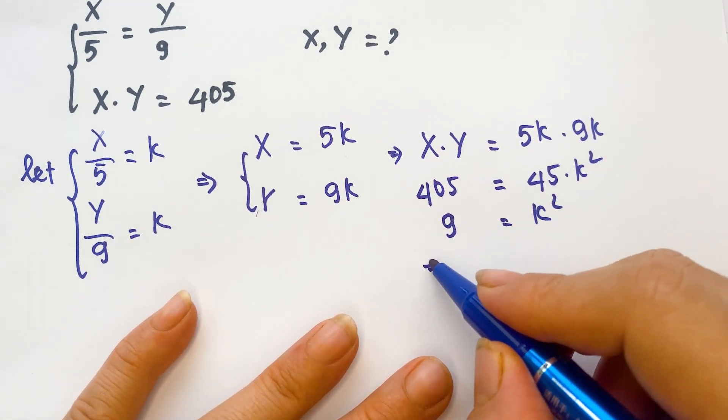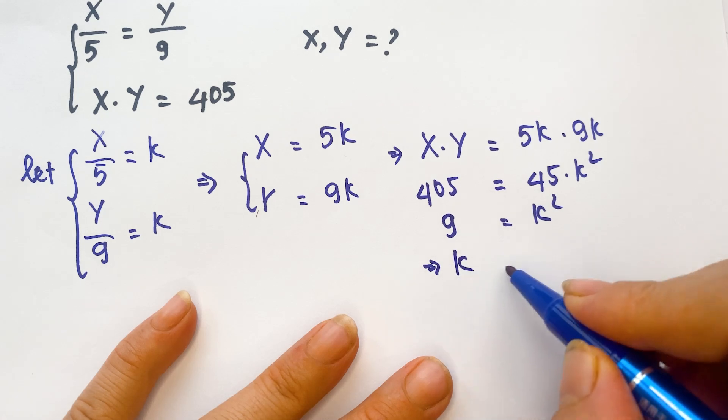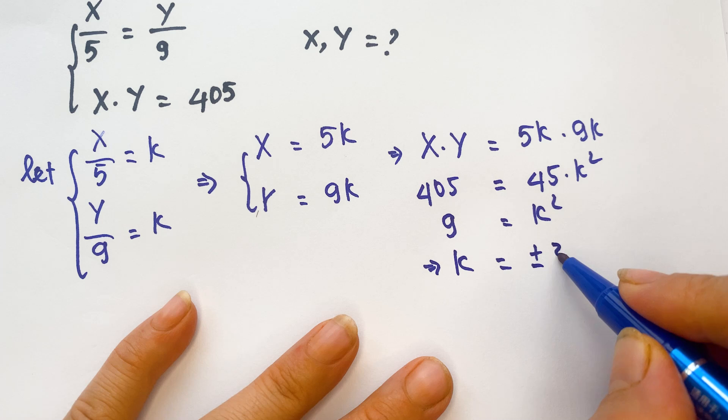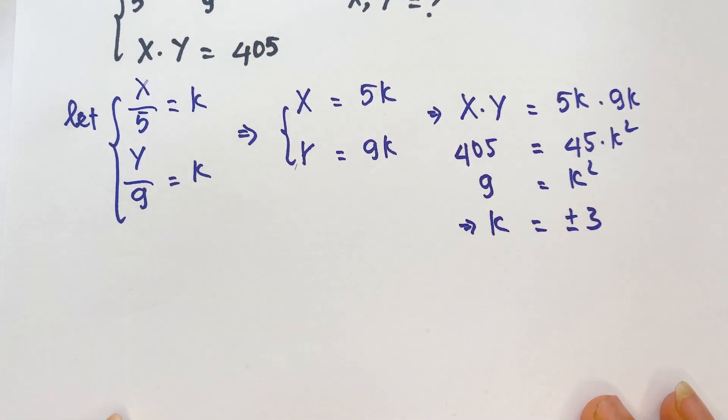And so next, you can have two values of k: k equals plus or minus 3.